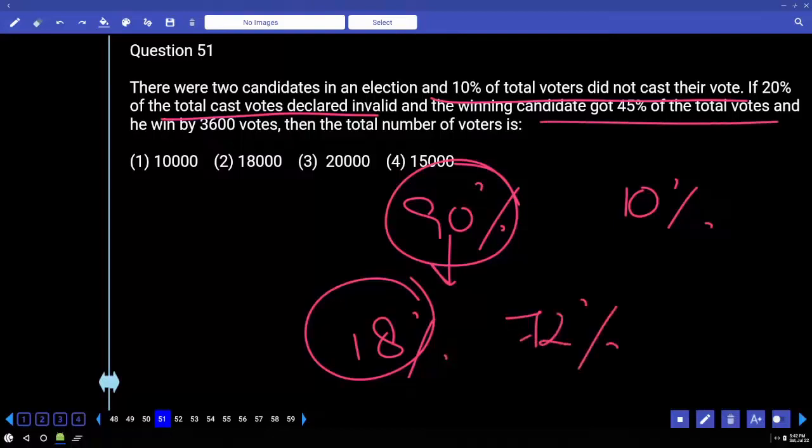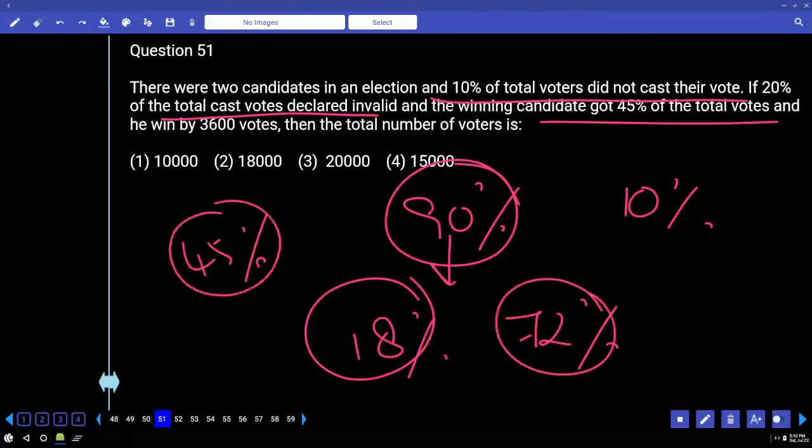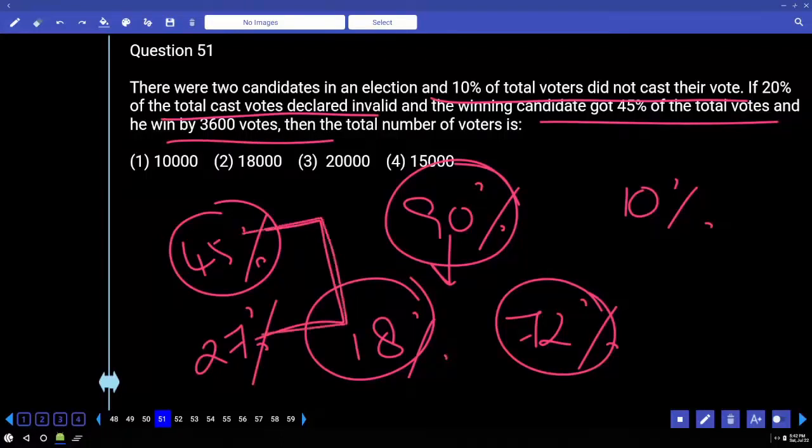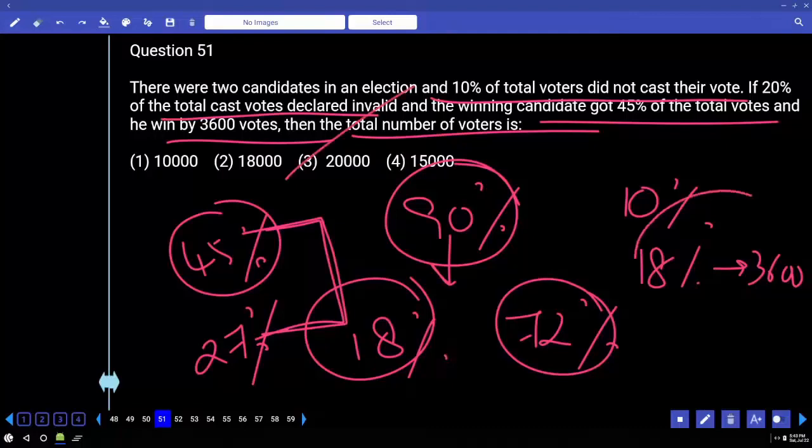He got 45% of the total votes. Total votes is 100. 45% of 100 is 45%. Out of 72, 45 winning candidate is getting 45%. Therefore, the losing candidate is getting 27%. So he won by 3600. What is the percentage difference? 18. 18 is 3600. What is 100%? 20,000. Double. 18 is 3600, 100 is 200, 20,000.